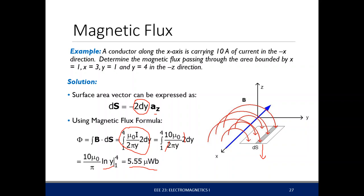That is the concept of magnetic flux. To recap: Biot-Savart, Ampere's circuital law, the curl operator, Stokes' theorem, and the concept of magnetic flux. There seems to be another quantity missing — it's actually the magnetic potential.